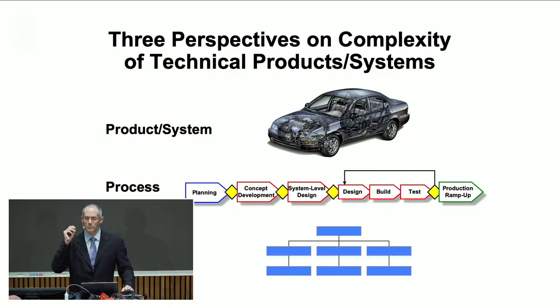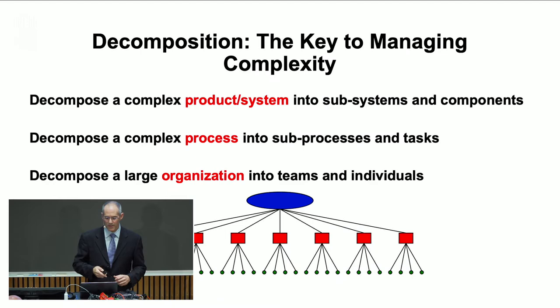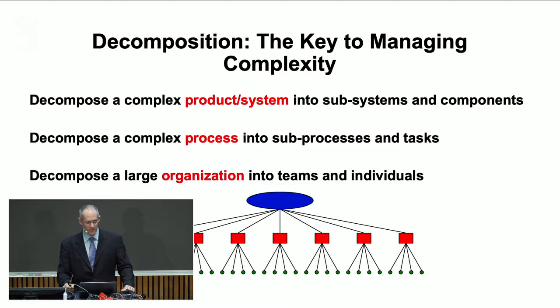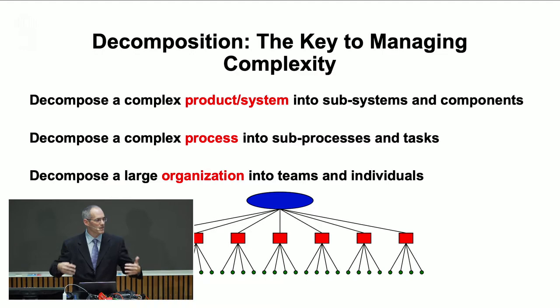The key technique in understanding the architecture is to recognize that in each domain there is a decomposition — breaking up something big and complex into smaller, simpler things. We perform that decomposition in each of the three domains. We decompose a complex product into subsystems, sub-subsystems, and components — a perhaps multi-layer decomposition that creates a network, often described by a simple tree structure. That same tree structure also describes the decomposition of the process.